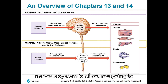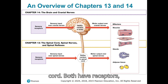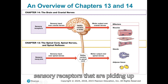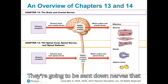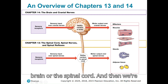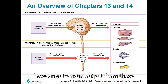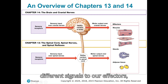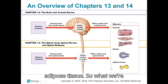Our central nervous system is going to contain both our brain and our spinal cord. Both have sensory receptors that are picking up information for some sort of stimulus. They're going to be sent down nerves that are going to be processed by either the brain or the spinal cord, and then we're going to have a reflex — an automatic output from those different signals to our effectors, whether that's muscles, glands, or even adipose tissue.